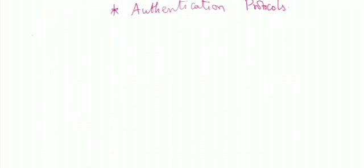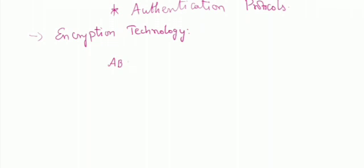The topic for discussion today is encryption technology. Encryption is nothing but converting the original text into a non-understandable format — that is called encryption. For a simple example, assume you are sending a message A B C. This is your original message. By the concept of encryption, this A B C is going to be converted into X Y Z, and then it is going to reach the other end.